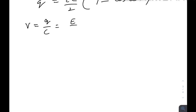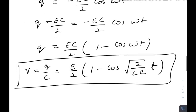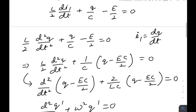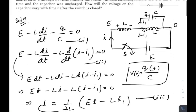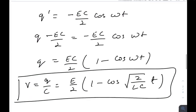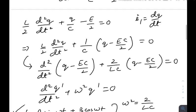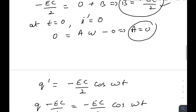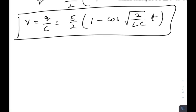The final answer — the potential difference across the capacitor — is q/C, which equals E/2·(1 minus cos(ωt)), where ω equals the square root of 2/LC. So V_C = E/2·(1 minus cos(√(2/LC)·t)). Sorry for taking so much time. I hope I was able to make you understand this solution. Feel free to comment if you have any doubt, and I will be solving one question every day from this book. Thank you.